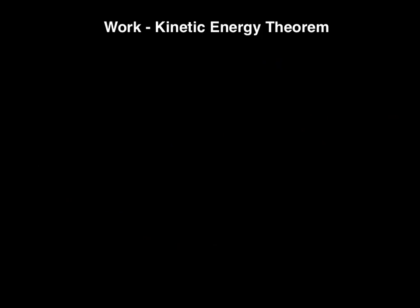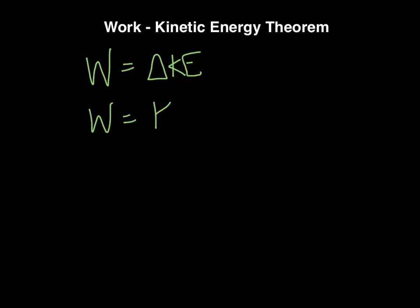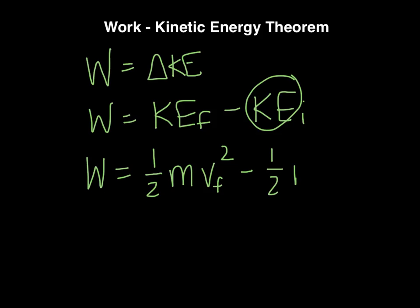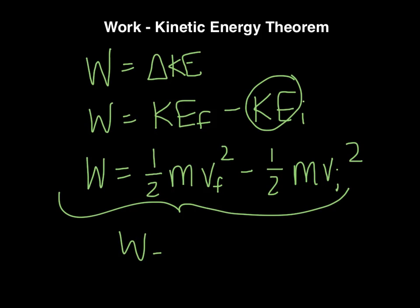To simplify that into an equation: work equals the change in kinetic energy. To find the change in something, we do the final minus the initial. So work equals KE final minus KE initial. Since we know the equation for kinetic energy, we can plug that in. The final relationship is: work equals one-half m times v-final squared, minus one-half m times v-initial squared. This is the work-kinetic energy theorem.